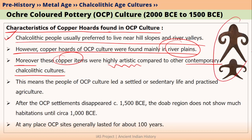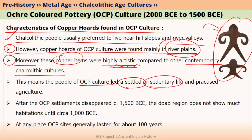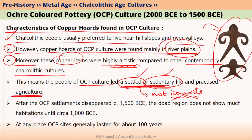For example, you can see a copper human figurine in this picture — this was found in copper hoards of OCP culture. Living in river plains and having highly artistic copper items means that these OCP people led a settled or sedentary life, which in turn means they practiced agriculture. Settled life simply means they were not moving much — they were not nomads. OCP people led a settled and sedentary life by practicing agriculture.